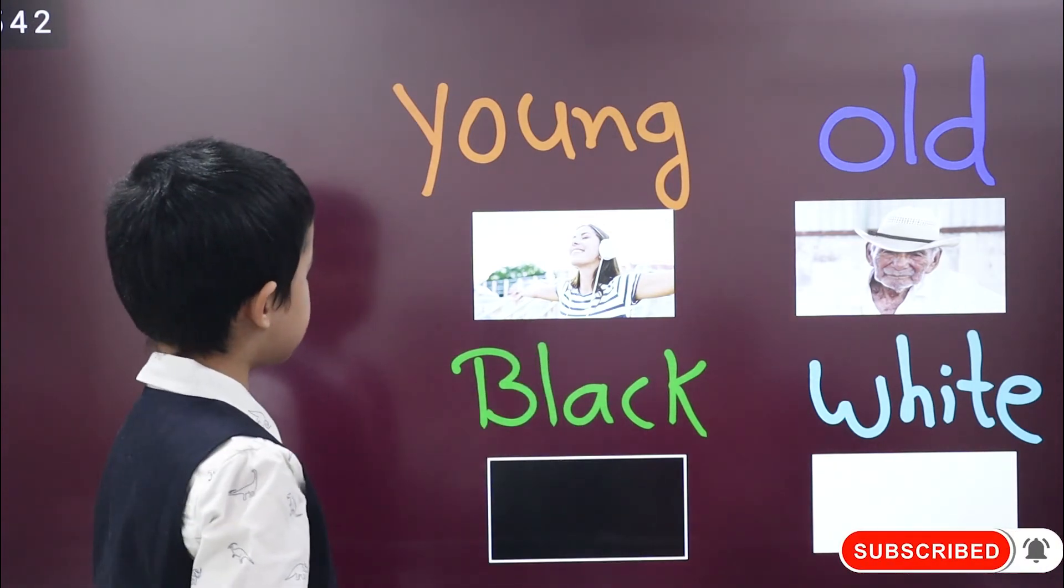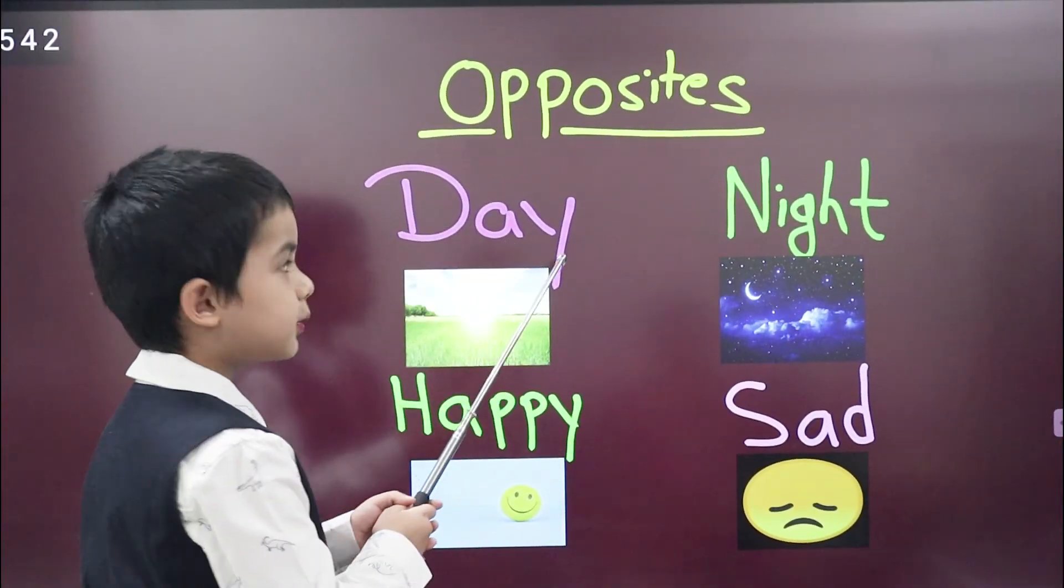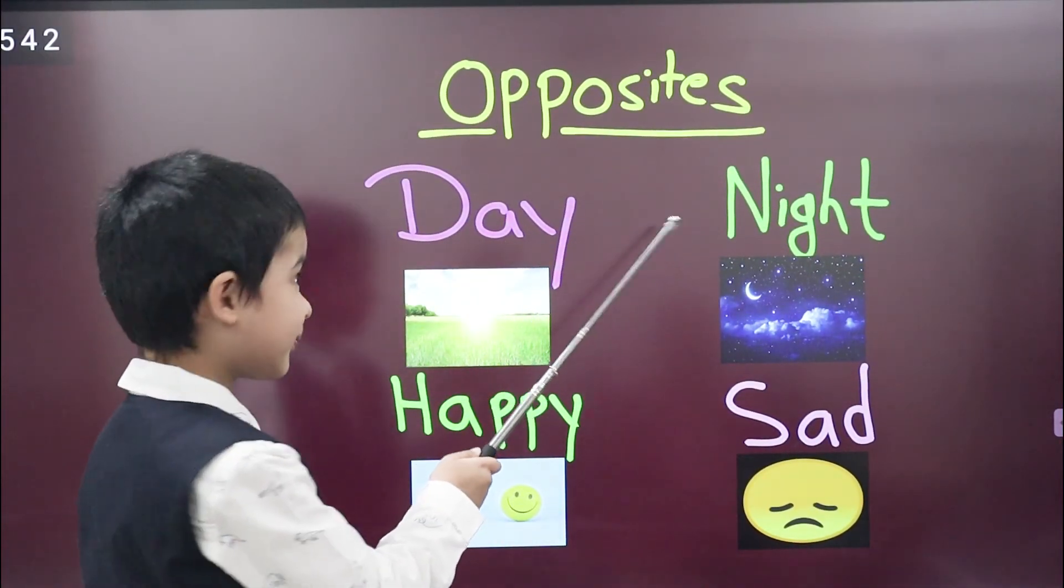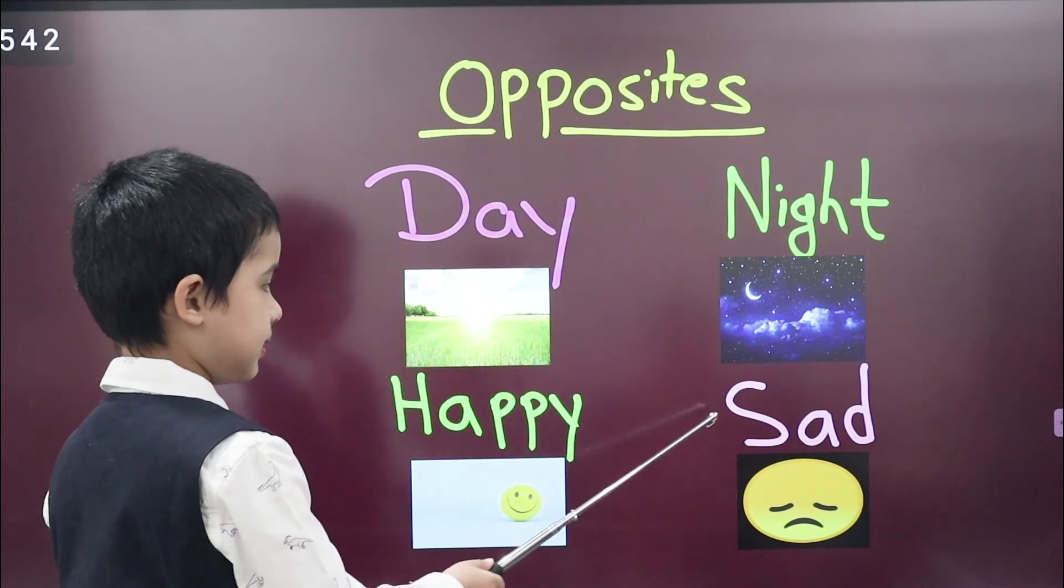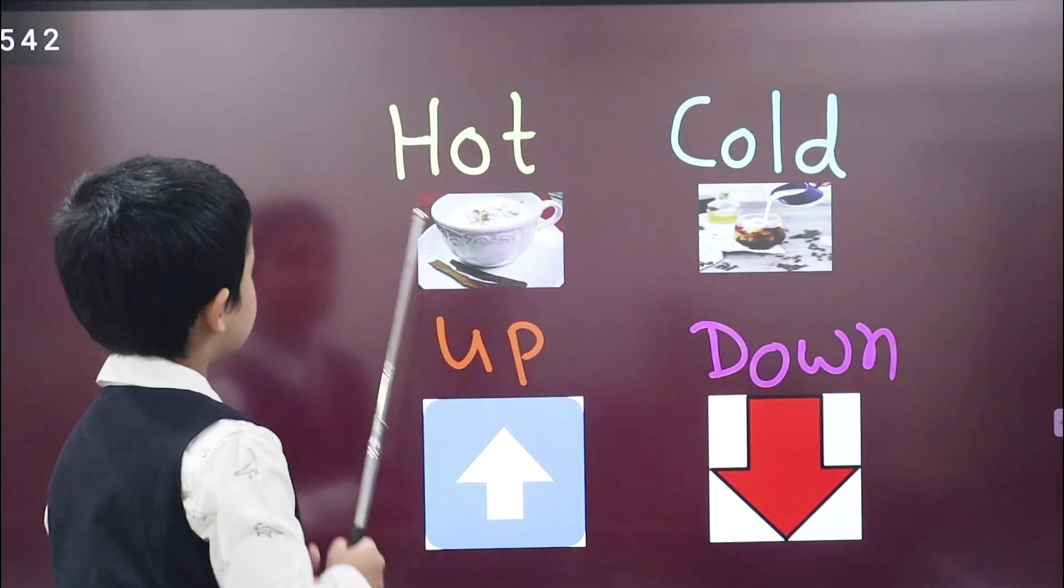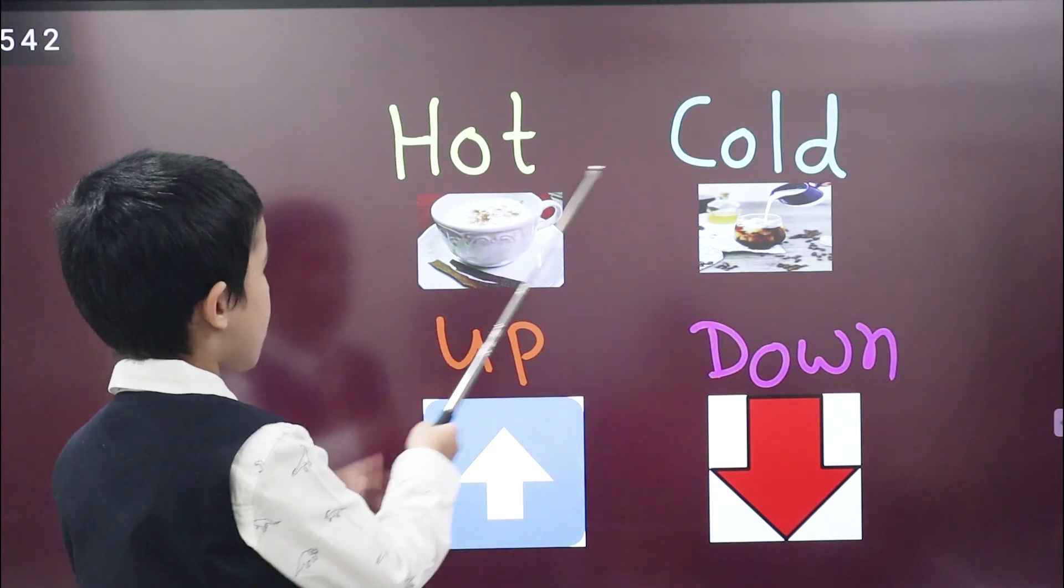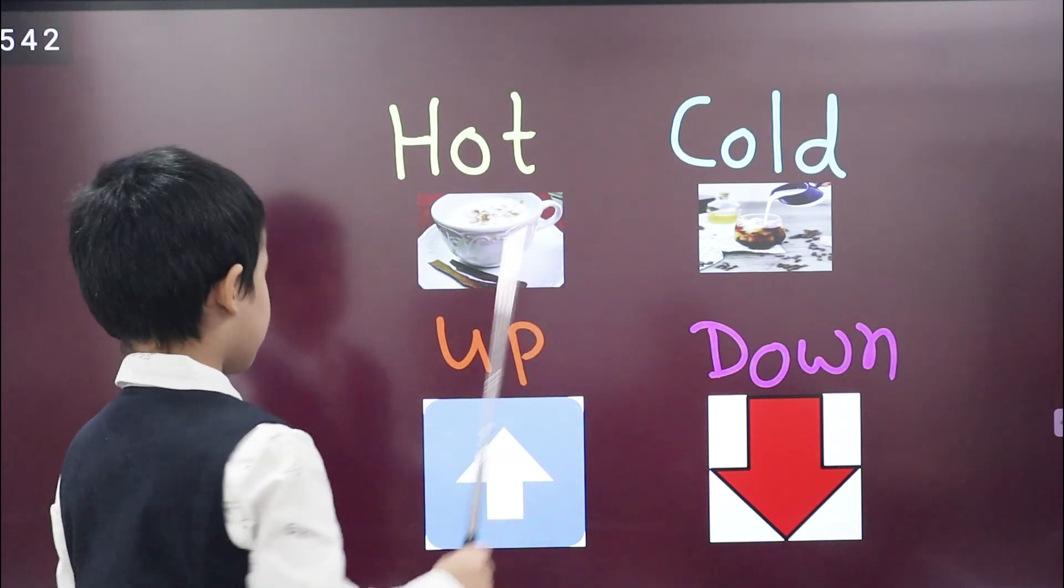Repeat with me. What is the opposite of day? Night. Very good. What is the opposite of happy? Sad. Very good. What is the opposite of hot? Cold. Very good.